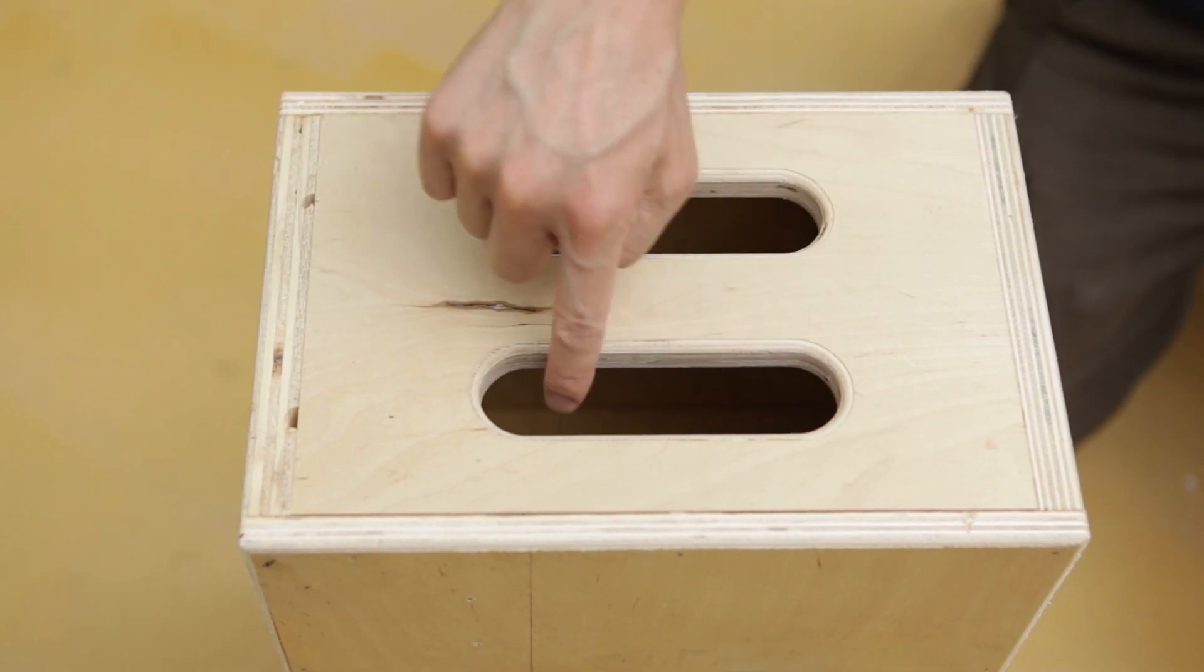You'd cut the raw shape of these handles with a plunge router, or maybe you'd drill two holes with a Forstner bit and connect them with a jigsaw.